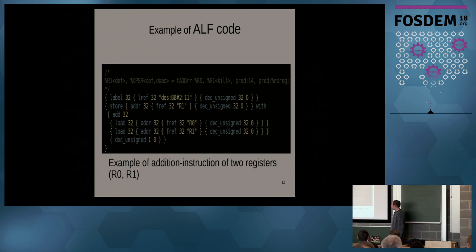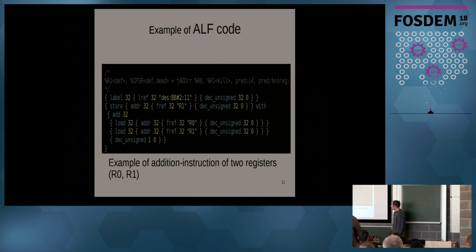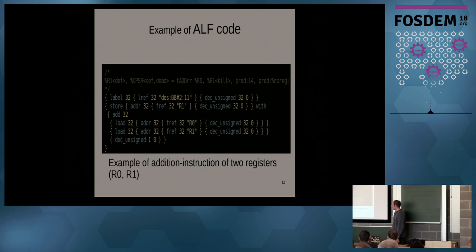Here's a small example of ALF code — you probably cannot read it, but you can look up the slides later. This would be an addition of two registers. The first thing you notice is that it's really verbose and annoying to read. There are lots of '32' annotations everywhere — that's the bit size. They are very specific about bit sizes because that's where you get the possible ranges of values from your calculations.